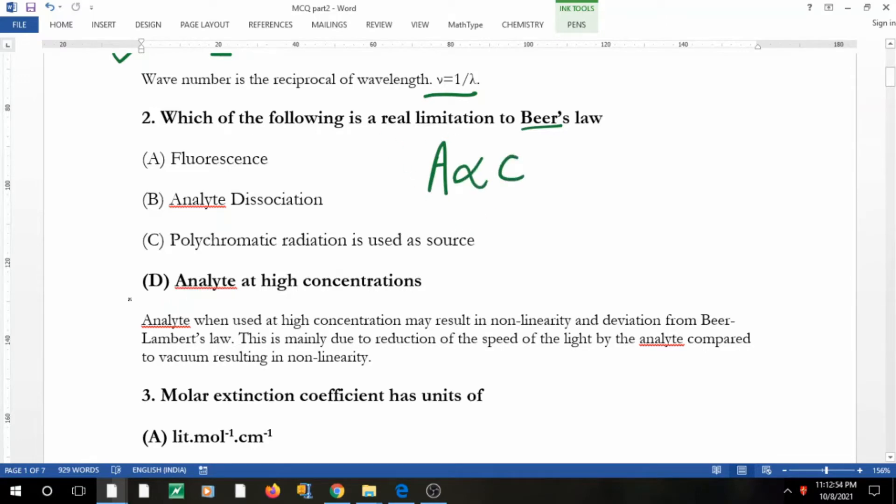Beer says absorbance is proportional to concentration. Definitely this is the real limitation: the analyte at very high concentration, if they are used, show a deviation from Beer-Lambert law. In the spectrometer when you use it, you will see the graph and deviations in the graph.